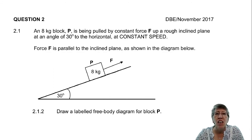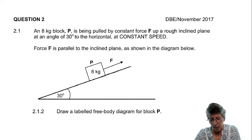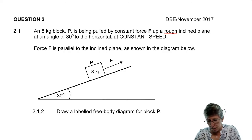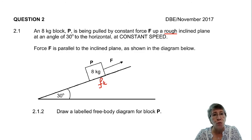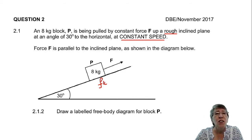An 8 kg block P is being pulled by a constant force up a rough inclined plane at an angle of 30 degrees to the horizontal at a constant speed. From this, we need to take the fact that it's a rough surface, and that immediately tells me there's a kinetic frictional force working there. There's definitely a reason why 'constant speed' is printed in capital letters — that is going to show you how to approach this question.